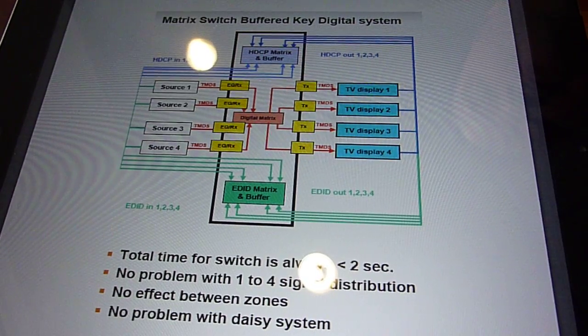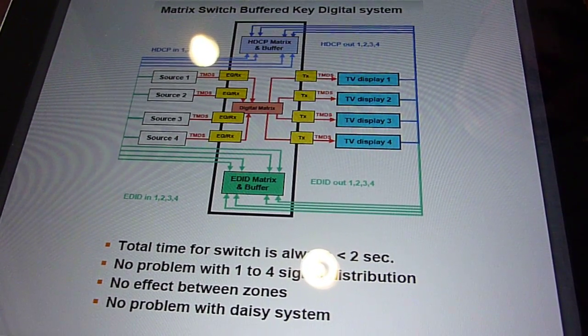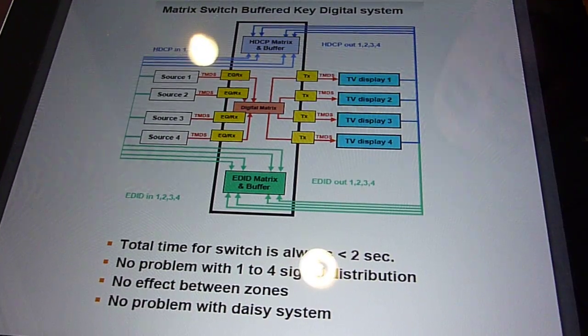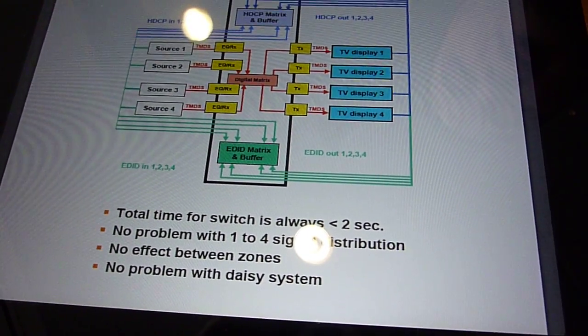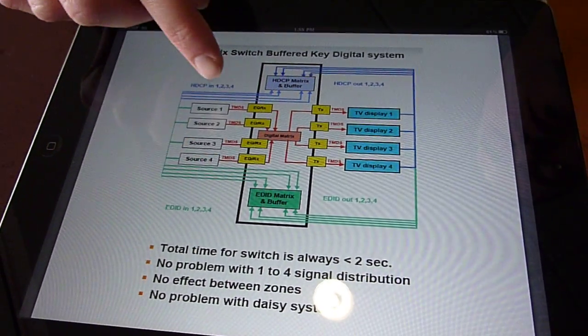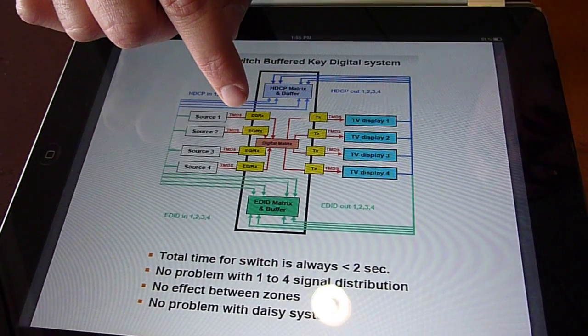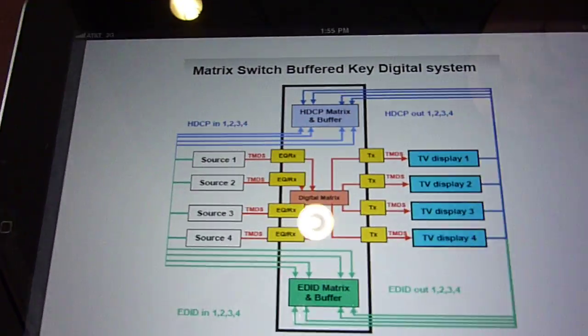Within our system, besides having audio, video and control, we also take the three main aspects of HDMI, which are HDCP, EDID control and a digital matrix, which is our TMDS matrix and buffer.